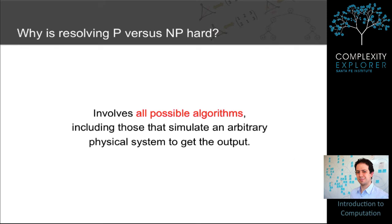Complex systems, it turns out, can give us some insight into why resolving P versus NP is so hard. The standard answer is that showing that P is not equal to NP involves showing that all possible polynomial time algorithms can't solve an NP-complete problem, which itself is a big enough task.